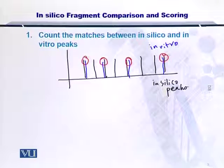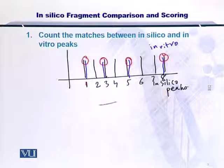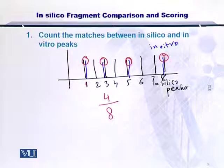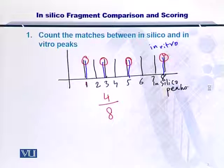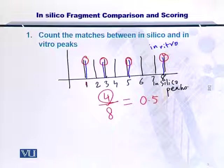The in silico peaks in all are 1, 2, 3, 4, 5, 6, 7 and 8. So, 8 peaks were there and only 4 could match. In this way you can arrive at a score of 0.5, or simply a score of 4. So, you have simply scored the in silico and in vitro comparison by counting the number of matching peaks.